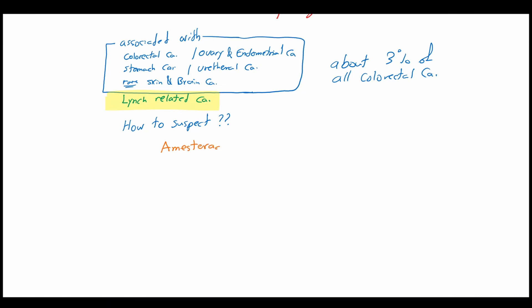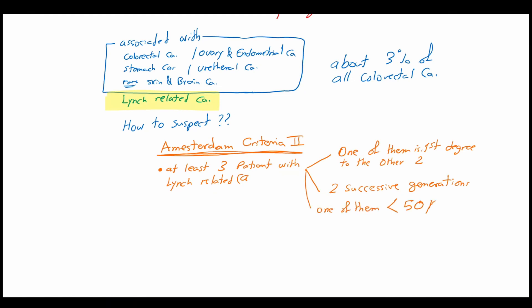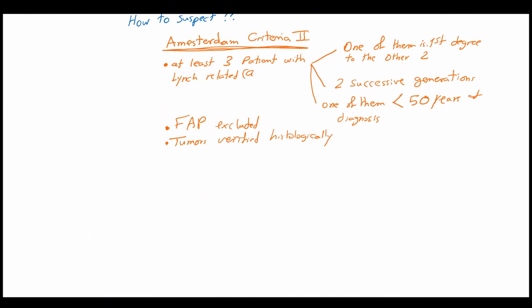A Lynch syndrome or familial colorectal carcinoma is suspected when the Amsterdam second criteria are met. When at least 3 patients with a Lynch-related carcinoma are diagnosed, one of them is a first degree relative to the other two in two successive generations like a father and a son, and at least one of them was younger than 50 years old at the first diagnosis. Also, FAP must be excluded and all tumors must be histologically confirmed.